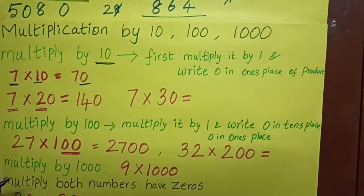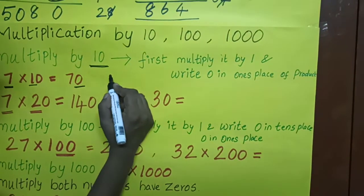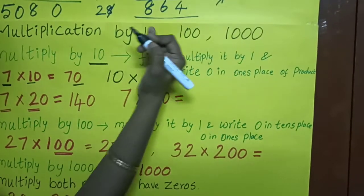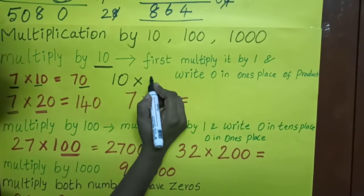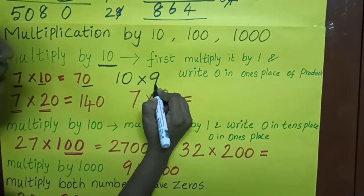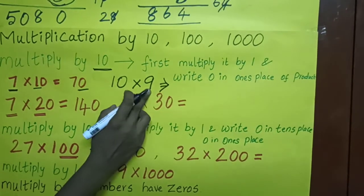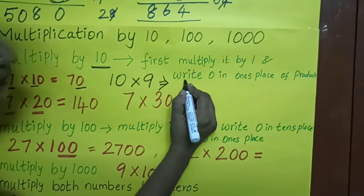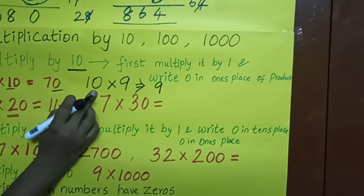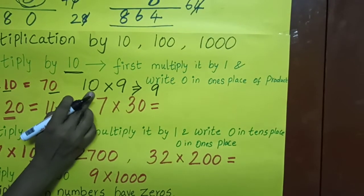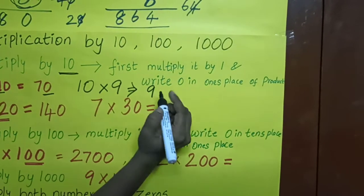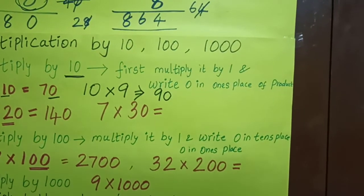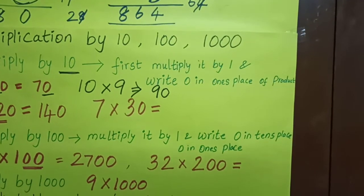Another example: 10 into 9. How do I do 9 into 1? The answer is 9. Then in the one's place, I have to add 0. That's all — easy.